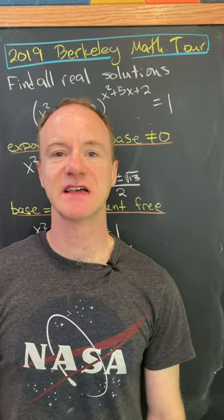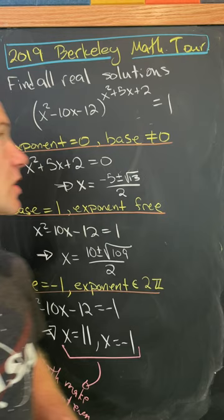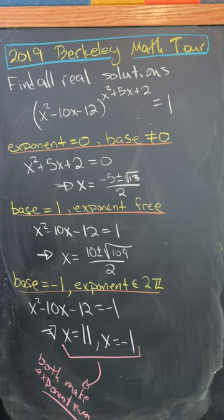Let's look at a nice problem from the 2019 Berkeley math tournament. Our goal is to find all real solutions to the equation x squared minus 10x minus 12 to the power x squared plus 5x plus 2.